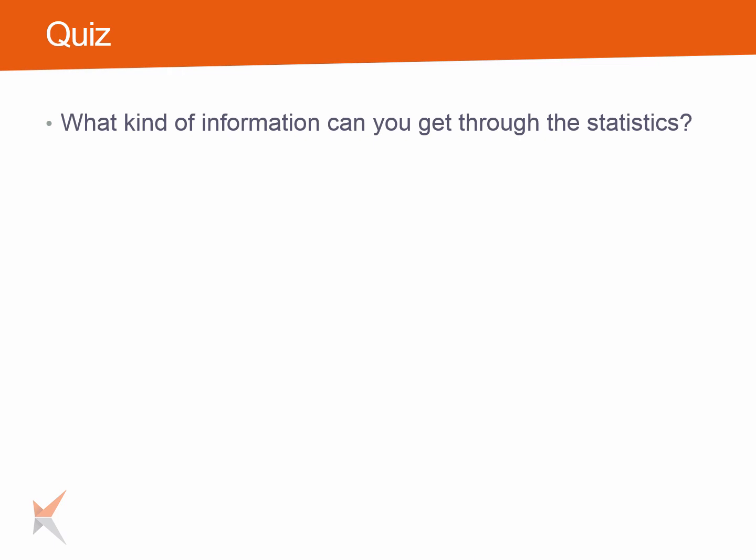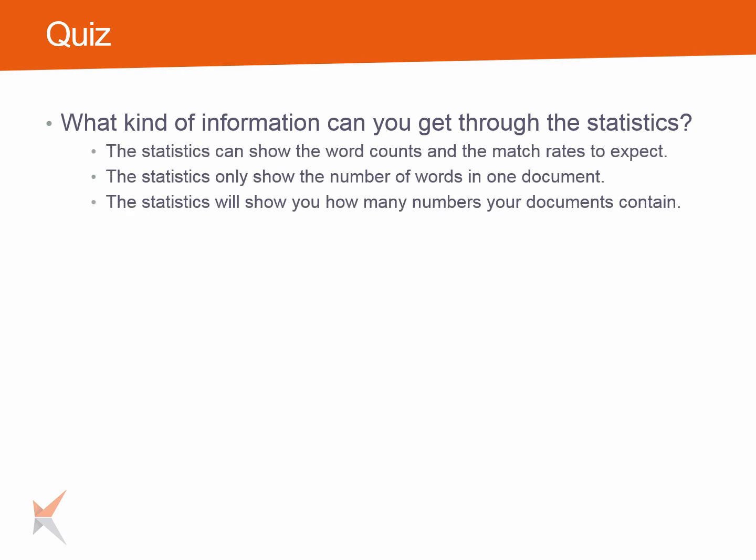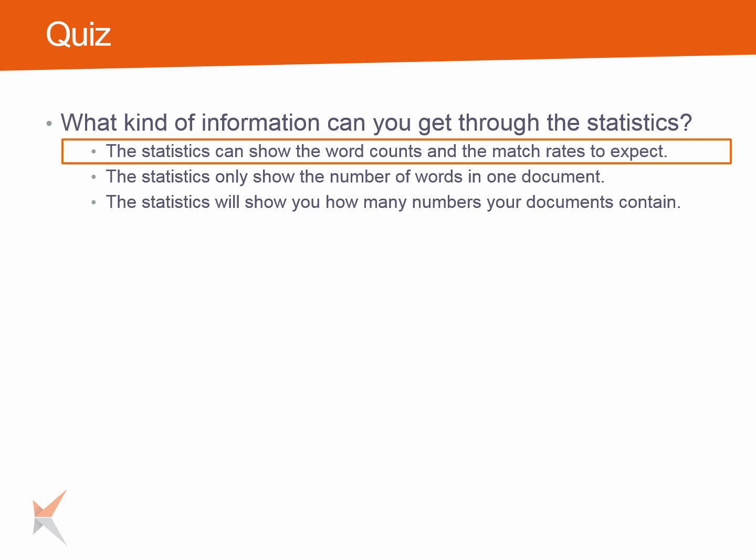And here comes the quiz. First question: What kind of information can you get through the statistics? The possible answers are: The statistics can show the word counts and the match rates to expect. The statistics only show the number of words in one document. Or, the statistics will show you how many numbers your document contains. The correct answer is: The statistics can show the word counts and the match rates to expect.